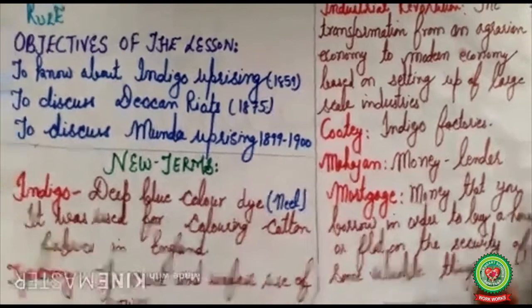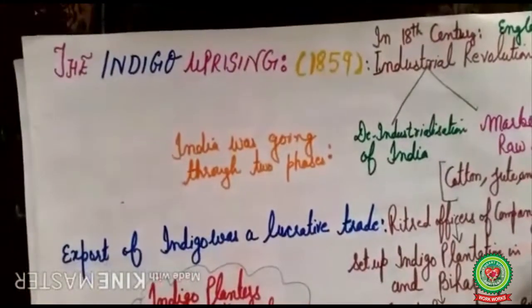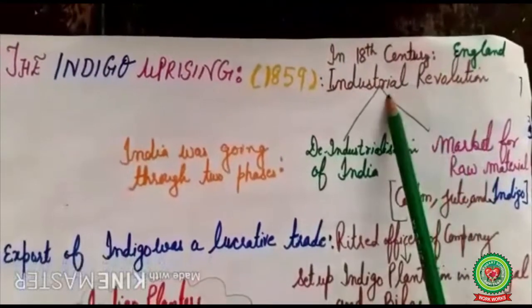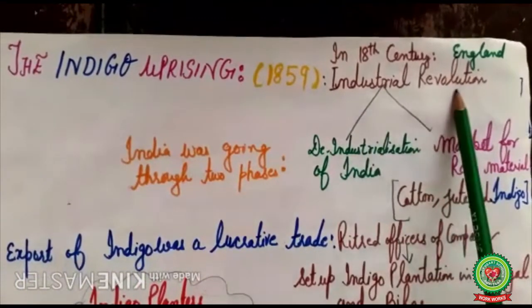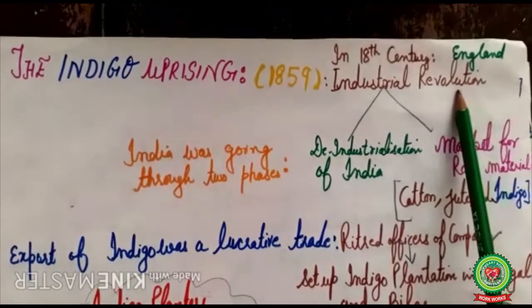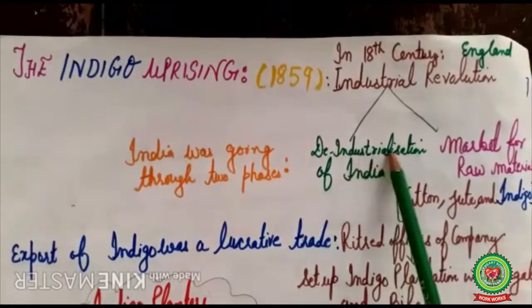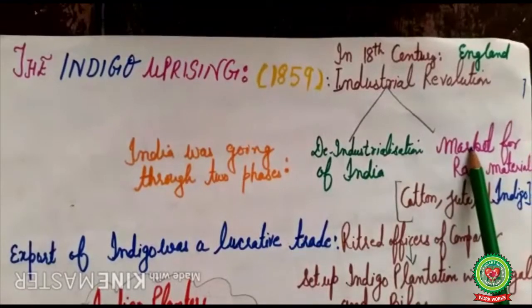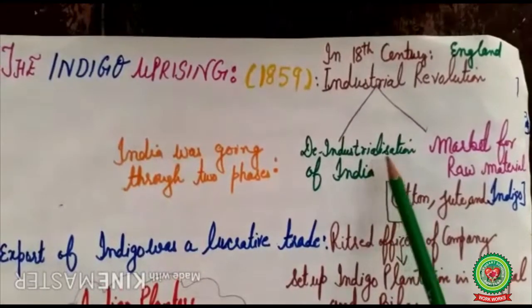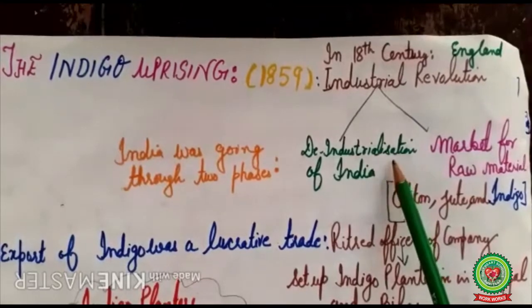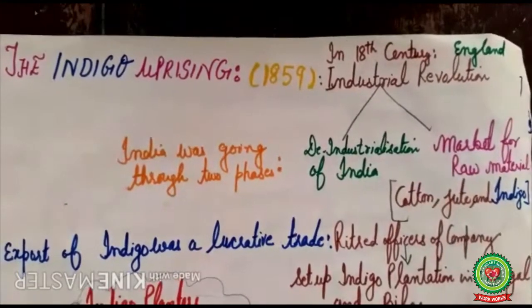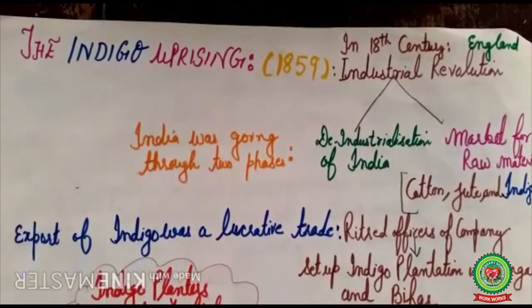The Indigo Uprising took place in India in 1859. In the 18th century, England was going through the Industrial Revolution — the setting up of industries at large scale. At the same time, India was going through two phases: de-industrialization of India, meaning Indian industries were neglected by the British government, and India was also treated as a market for raw material like cotton, jute, and indigo. As a result, export of indigo was a lucrative and profitable trade.